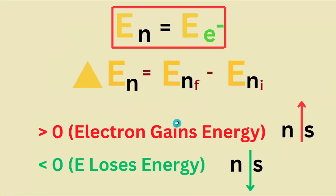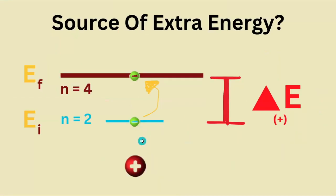So if our electron goes from a low n to a high n, it's going to gain energy, and if our electron goes from a high n to a low n, it's going to lose energy.